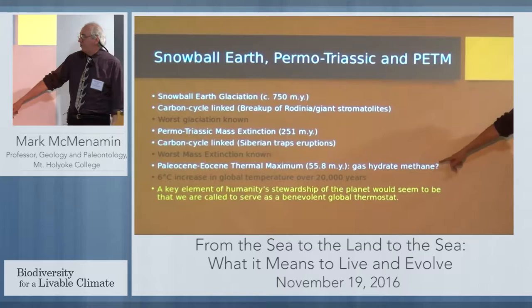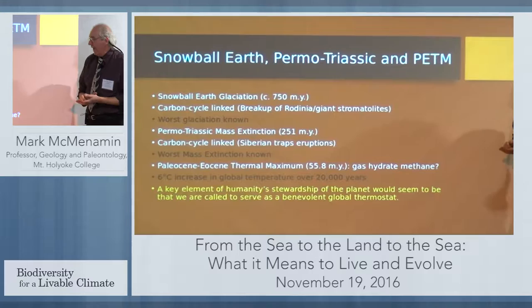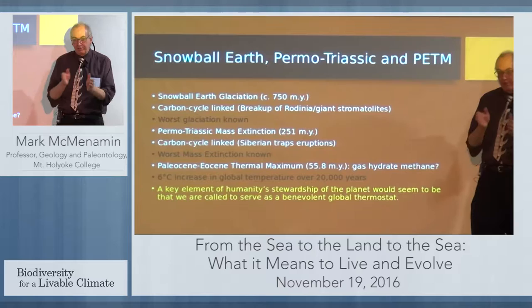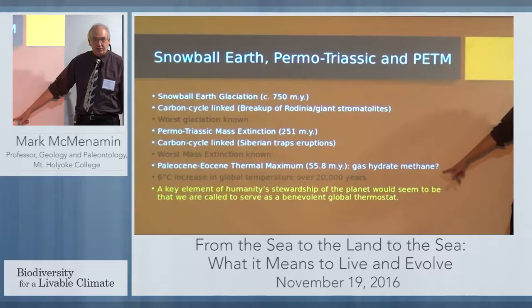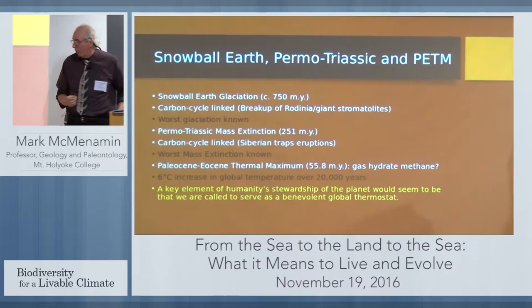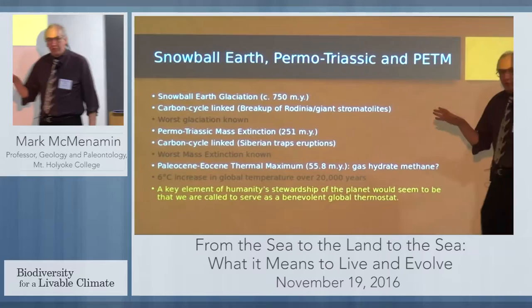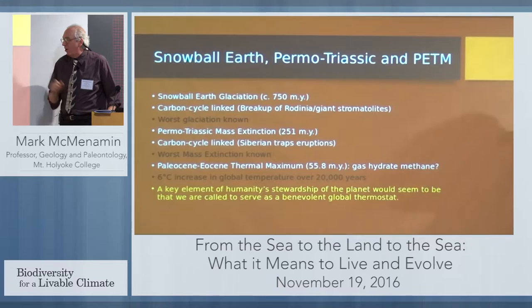Then we have the Paleocene-Eocene Thermal Maximum at 55.8 million years ago, which led to a six-degree centigrade increase in global temperature over a relatively short span of 20,000 years — it may actually have been less than that. The reason is not entirely certain, but it may have to do with global warming that led to gas hydrate release by the breakdown of clathrates beneath permafrost and in the seafloor. In any case, a traumatic event. We see that perturbations to the carbon cycle can lead to fairly dramatic effects on our blue marble in space.